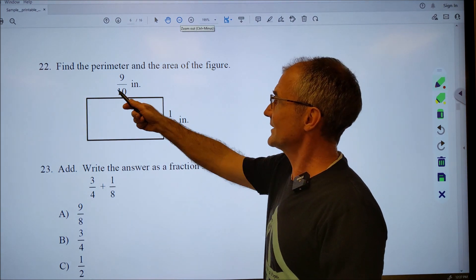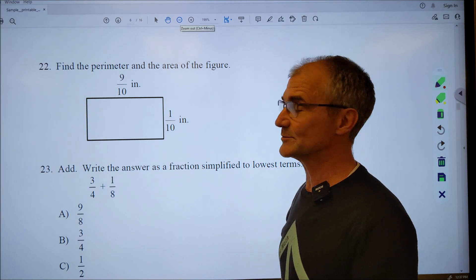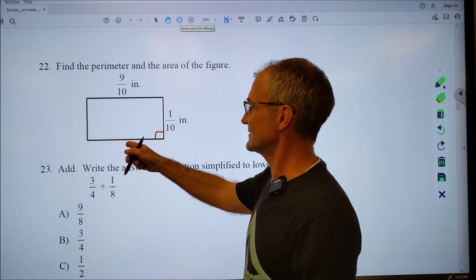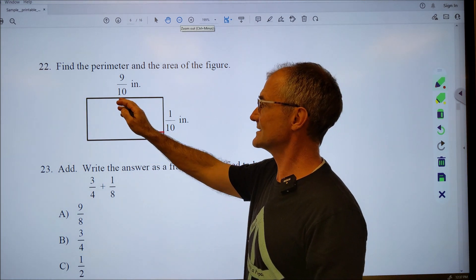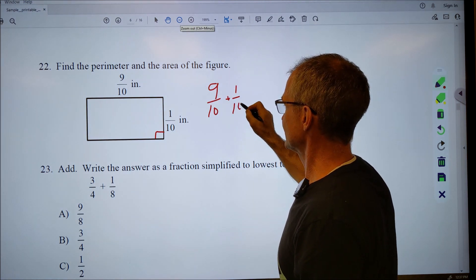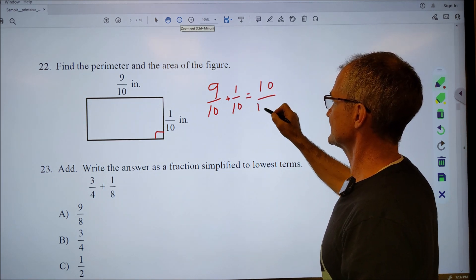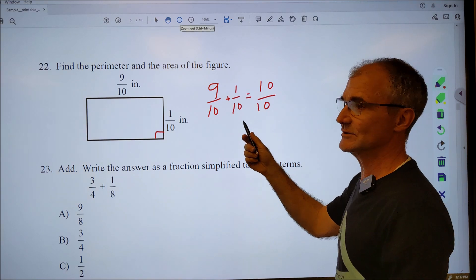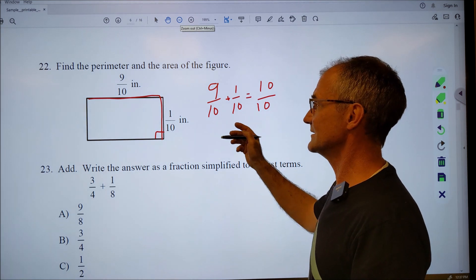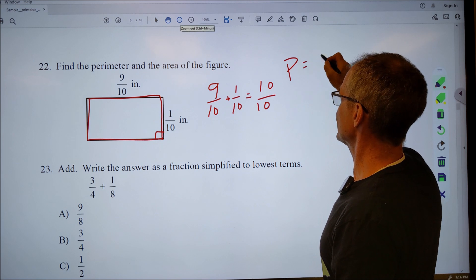Number 22, find the perimeter and area of the figure. There are going to be two answers here and this is a non-multiple choice answer. If this is nine tenths and one tenth, it's implying that it is a rectangle. I could add that side and that side, nine tenths plus one tenth. When I add fractions, I add across the top and keep the bottom as long as it's the same number and I get 10 tenths that reduces to one. So this side and this side together are equal to one. So one plus one would be two, so the perimeter is equal to two.